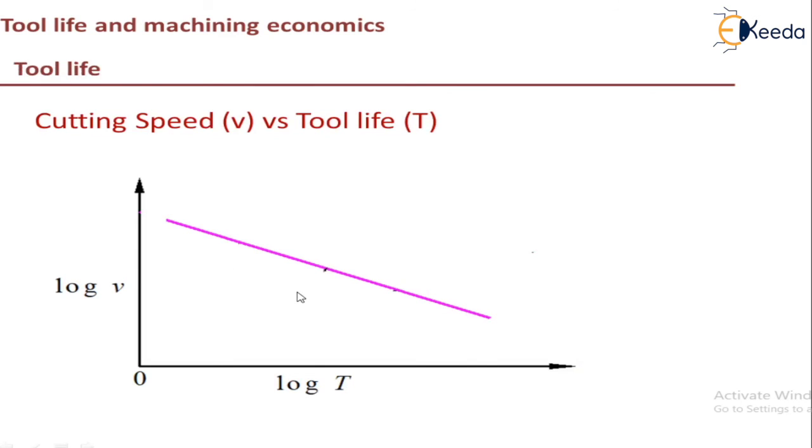And also the velocity, that is cutting speed versus tool life graph is like this. So as you increase the velocity, the tool life decreases. And as you decrease the velocity, the tool life increases. So this is about tool life and different influencing parameters.